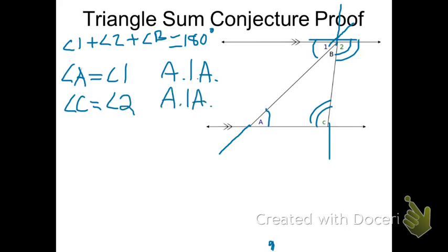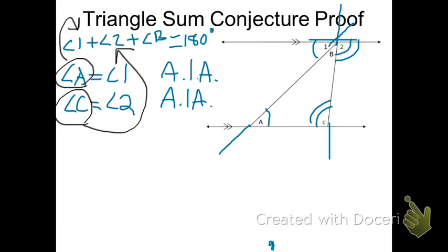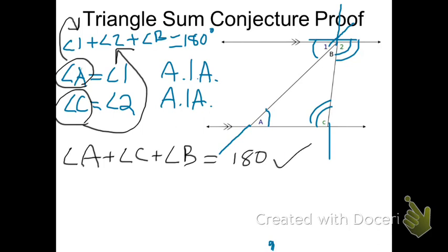So now if we go back to our first statement and substitute angle A in for angle 1 — which we can do because we know they're equal — and take angle C and substitute it in for angle 2, we'll get that angle A plus angle C plus angle B add up to 180 degrees. That is what we are trying to prove: that the three interior angles A, B, and C of a triangle always add up to 180. We proved the triangle sum conjecture.